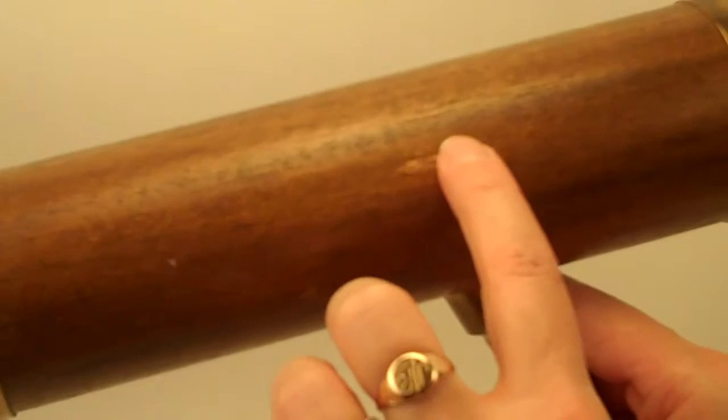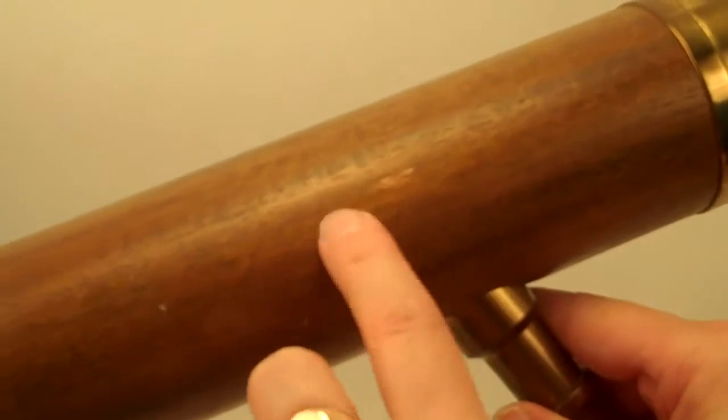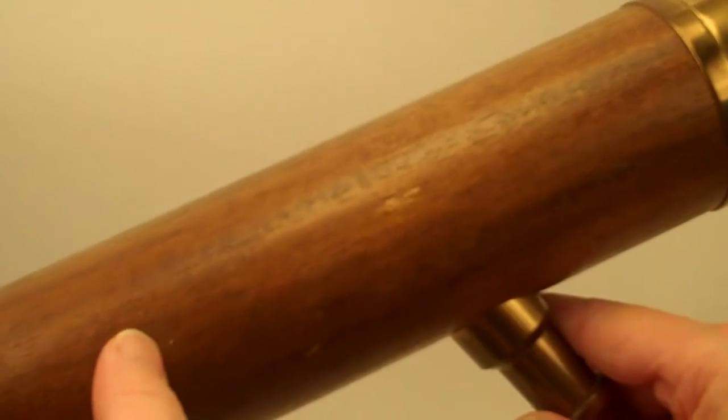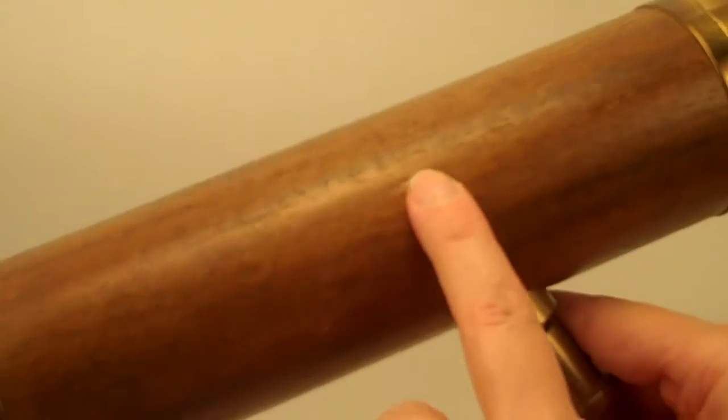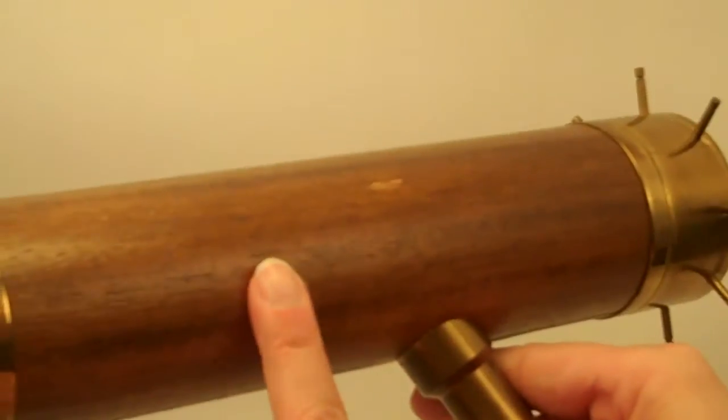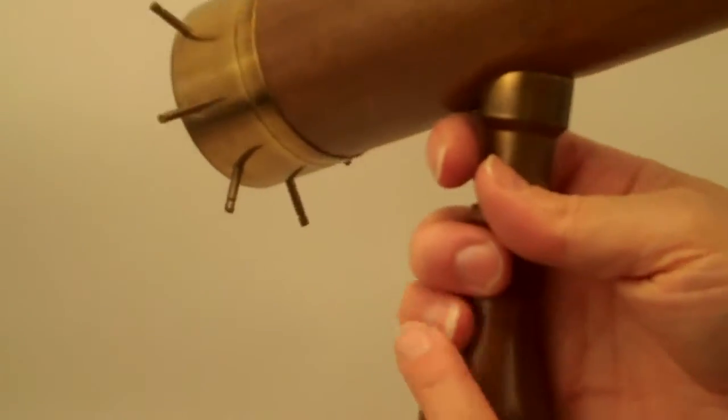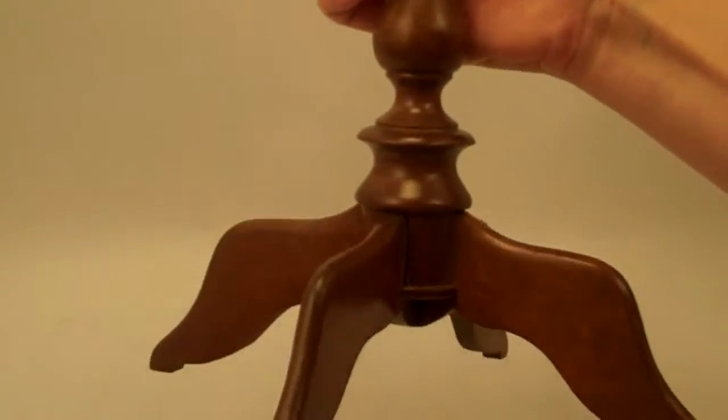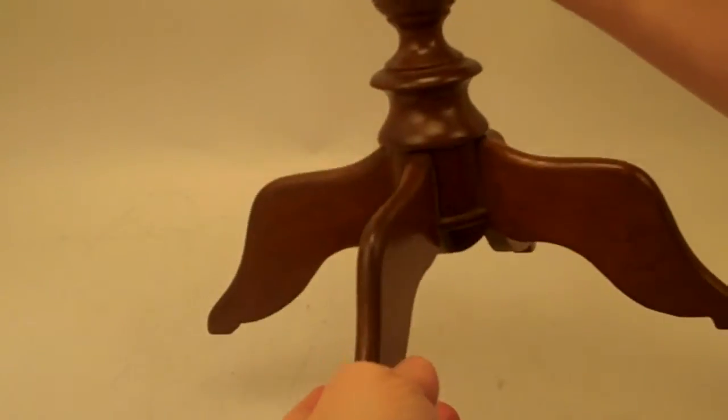The walnut veneer barrel does have a slight condition issue on this side. That is going to clean off right there. This ding is noticeable here in the veneer. And the base is a solid walnut, also inspired by the Bush Kaleidoscopes.